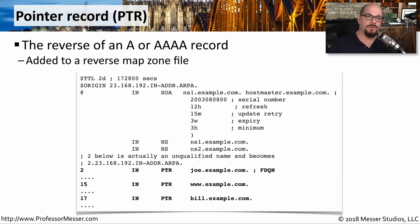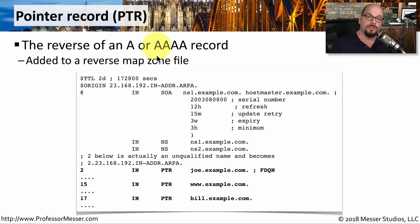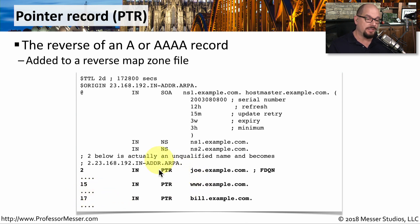We commonly use DNS servers to associate a name with an IP address, but we can also do the reverse — provide the name server with an IP address and it will provide us with the name. It's able to do this by using pointer records, or PTR records, which are effectively the reverse of an A or a quad A record. In the DNS configuration, we list out the IP addresses associated with these devices, specify that these are PTR or pointer records, and then provide the fully qualified domain name of these devices.